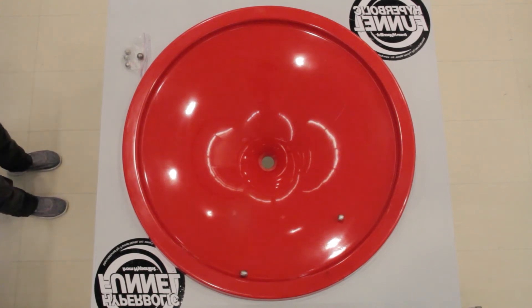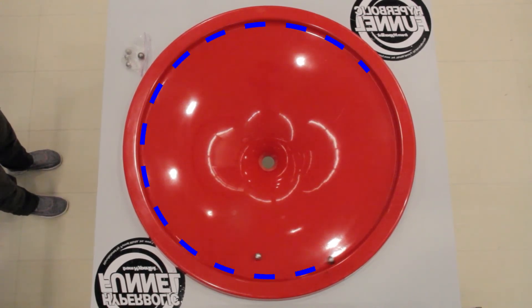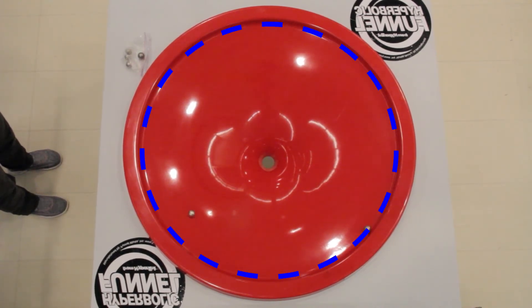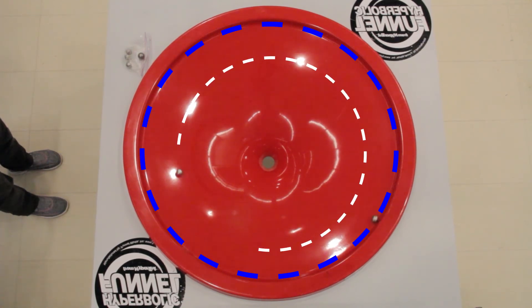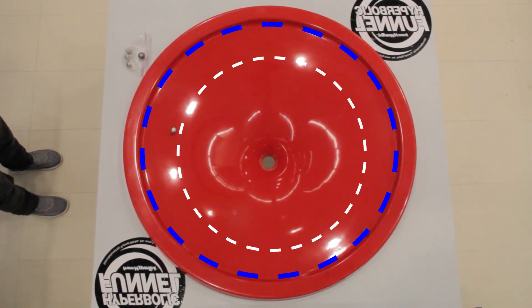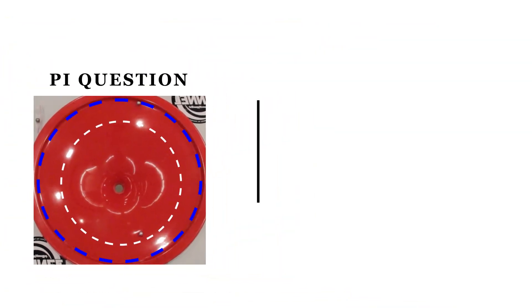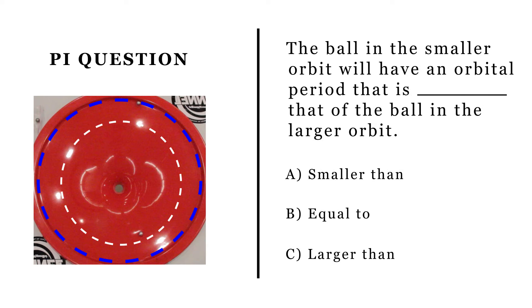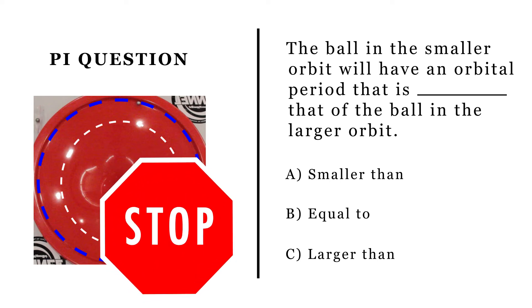We now have two balls in orbit — one pretty much in the two-second orbital period shown earlier, and another in a smaller orbit. Let's explore our understanding of orbital motion with a peer instruction question: Two balls are placed in orbits. How will the orbital period for the ball in the smaller orbit compare to the orbital period of the ball in the larger orbit? Please pause this video and answer the question.